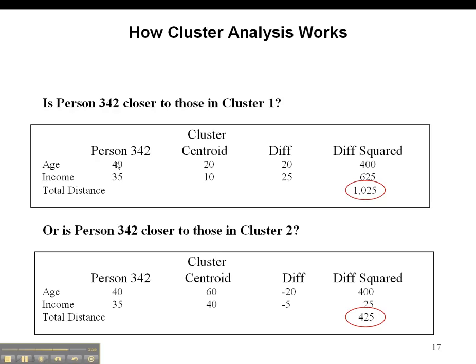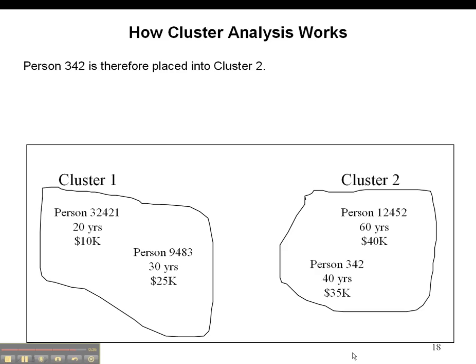Let's just look at the math here. Somebody who's 40 years old, 35,000 income. Do they go here or are they closest to this guy? 20 units squared 400, 25 units squared 625, total distance 1025. 20 units squared 400, 5 units difference squared 25, 425. This guy is closest to cluster 2, furthest from cluster 1. That's where he goes.